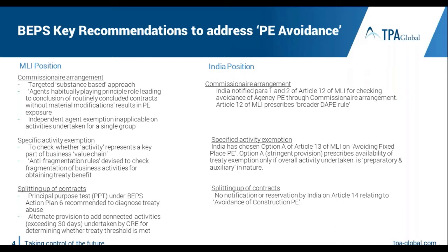India has essentially opted for Option A on specific exemption activity, which is much more stringent than Option B. It goes into the functions of what is core and what is non-core, rather than simply following whether activities are preparatory and auxiliary in nature. If the activities form part of your core activity, the fact that they are preparatory and auxiliary will not be of any relevance going forward.